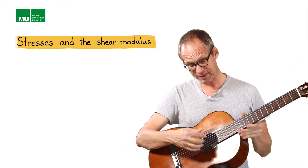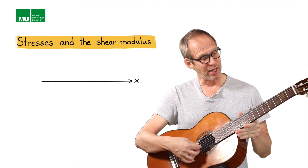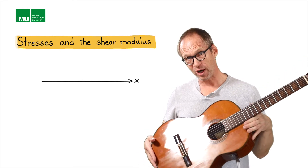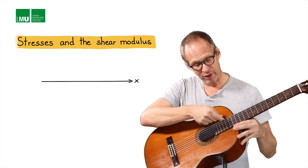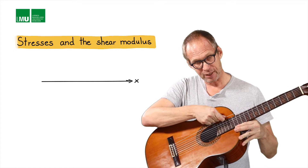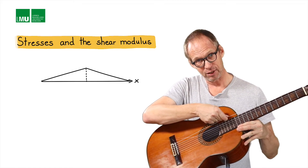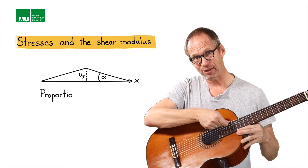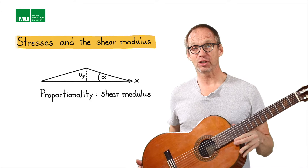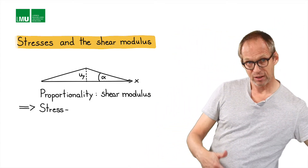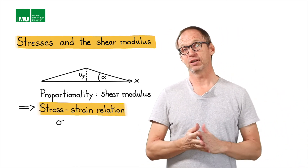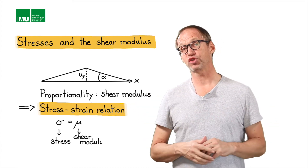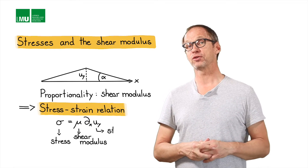So that's basically an elastic string here. And what we have, if we pull the string, we have elastic waves. What we need to describe the physics of that is actually the concept of stress. So if I pull here the string in one direction, I exert a force, and you see that there is an angle generated. The proportionality constant between the elongation and that angle is the so-called shear modulus. And that leads to the concept of stress — the stress-strain relation. In that simple case, the stress is proportional to the strain, and the proportionality constant is the shear modulus mu.